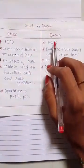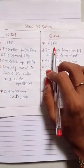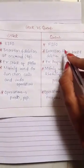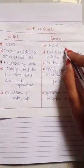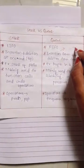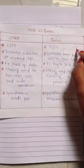And in the queue, this is first in first out — insertion from the back and deletion from the front.